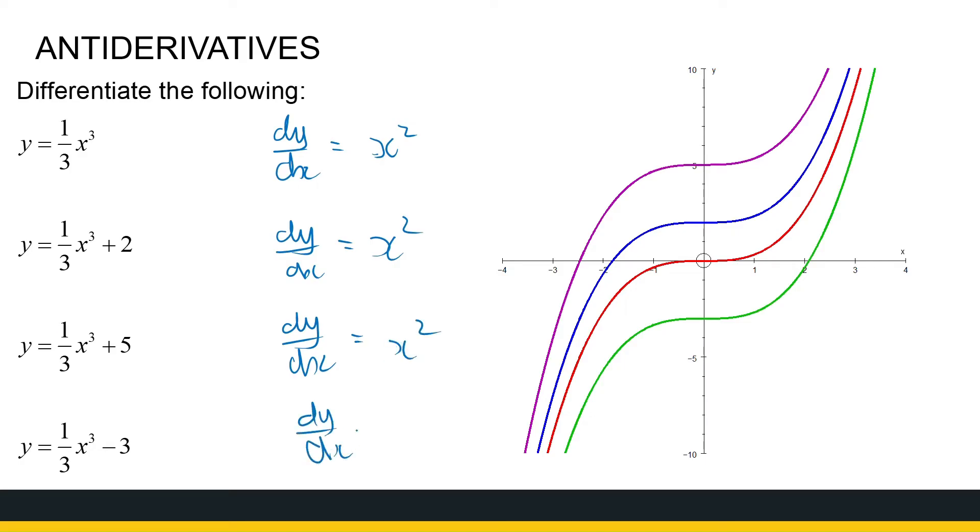So what we notice is that if I've got the function x squared, there's a lot of functions I can derive to get to x squared. All right?